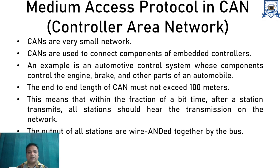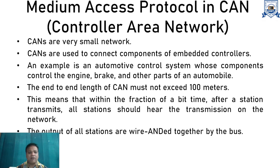First we will discuss the medium access protocol in CAN, the Controller Area Network. You might have heard of LAN, WAN, and MAN, but CAN is another type of network — a very small network used to connect components of an embedded controller. An example is an automatic control system like a car, which has components like the engine, brake, and accelerator. The end-to-end length of a CAN must not exceed 100 meters.